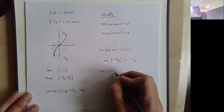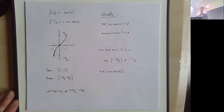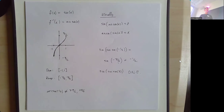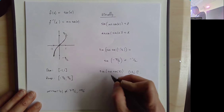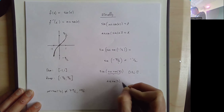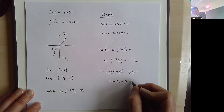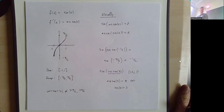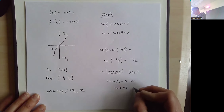If someone said find sine of arc sine of 3, you wouldn't let them trick you — that does not exist. Arc sine of 3 isn't a real thing because there is no angle whose sine equals 3. The biggest sine can ever be is 1, and the most negative is negative 1. So arc sine of 3 is undefined.